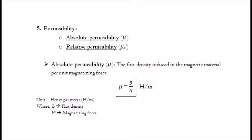5. Permeability. A. Absolute permeability, μ. The flux density induced in the magnetic material per unit magnetizing force. It is given by: μ equals B divided by H. The unit is henry per meter, where B is the flux density and H is the magnetizing force.